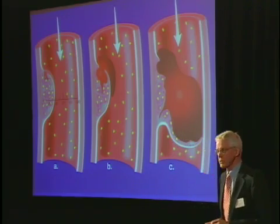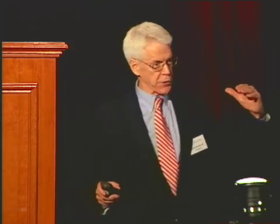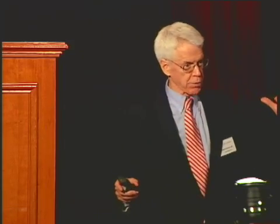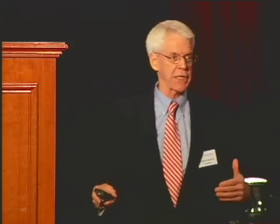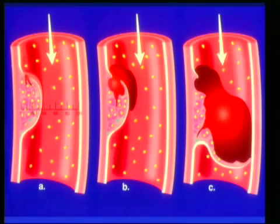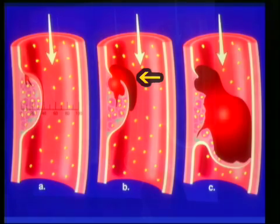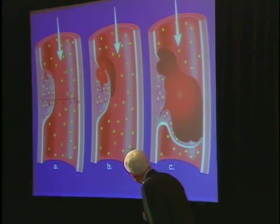I'll mention them once — you don't have to remember them for the test. The foam cell makes metalloproteinases, stromelicin, elastase, collagenase. What do they do? They erode this cap over the plaque — this thin cap.